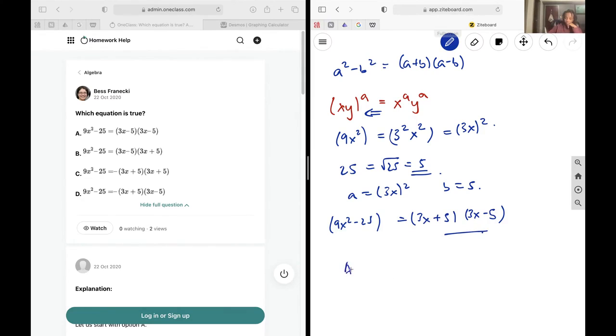This will give us 9x squared minus 30x plus 25, which is obviously not what we're looking for, so A is out.